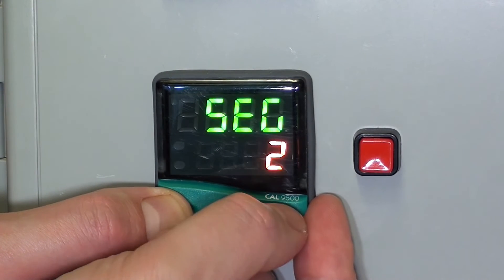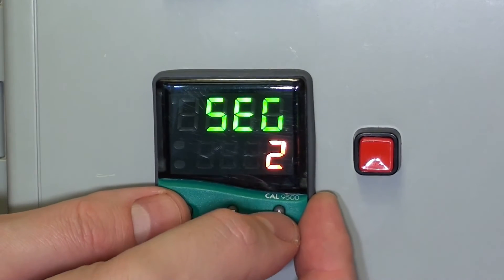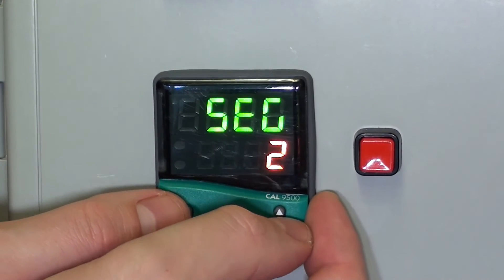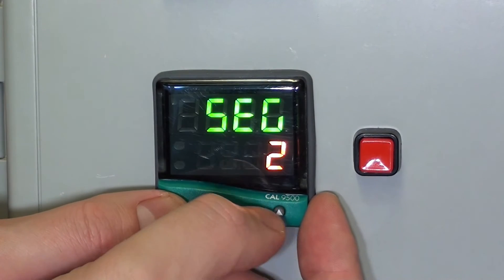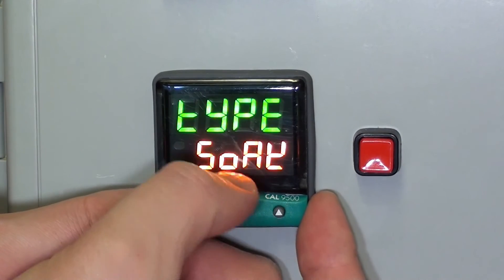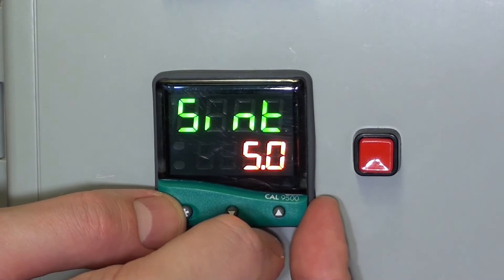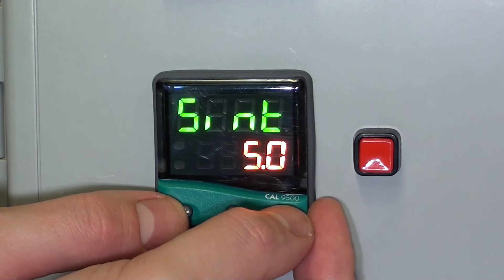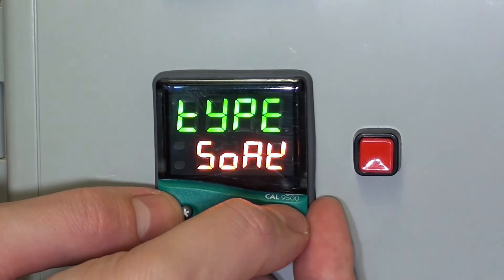Segment 2. Okay, so segment 2 is where we want it to use the soak function. Okay, and that is set up for, yeah, type soak, 5 minutes. That's segment 2.